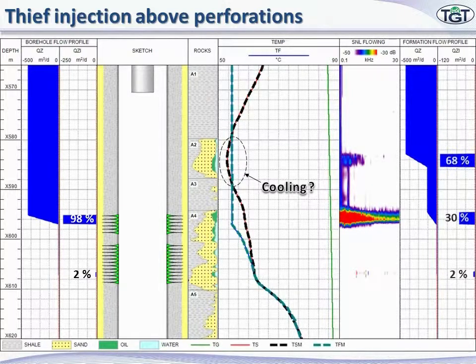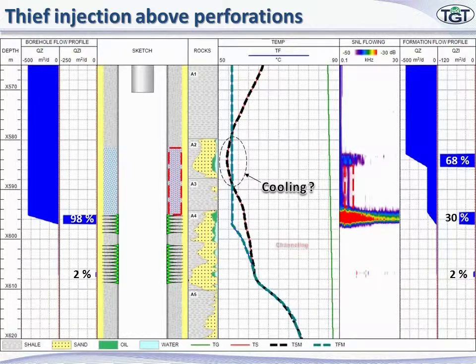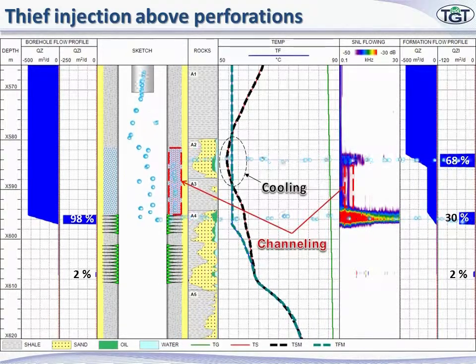Noise power doesn't depend on the rate of the flow. That's why, to evaluate the flow, we should use temperature modeling.